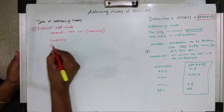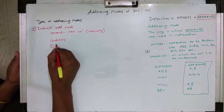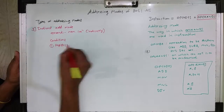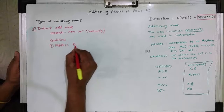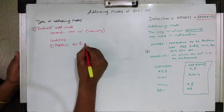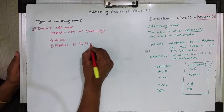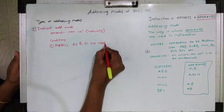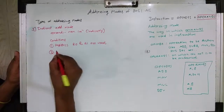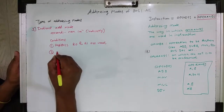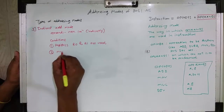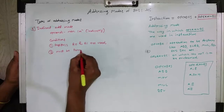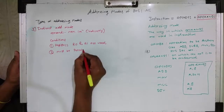The conditions for indirect addressing mode are: first, registers R0 and R1 are used; and second, they must be preceded by the @ (at the rate) sign.